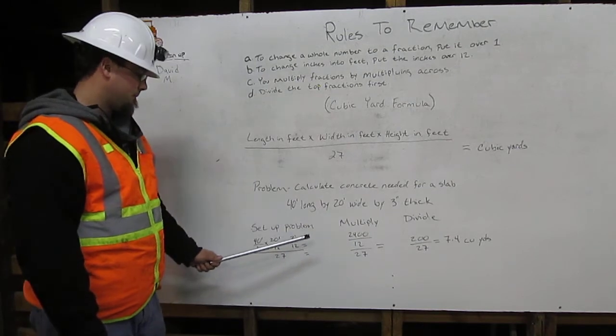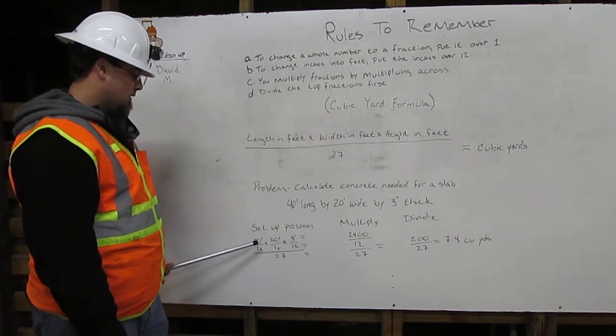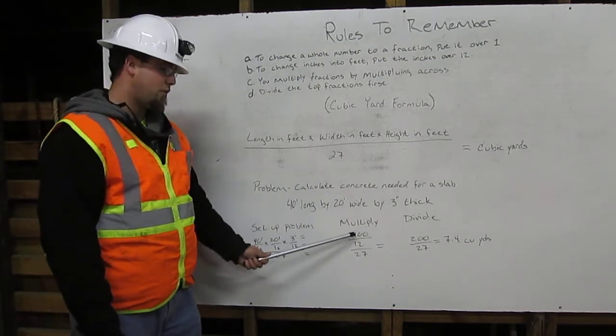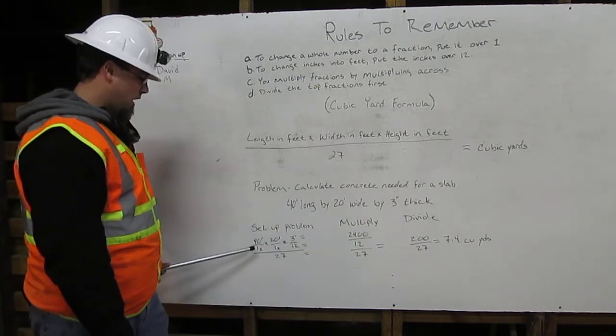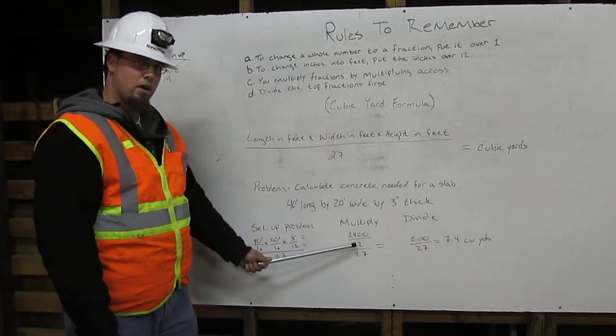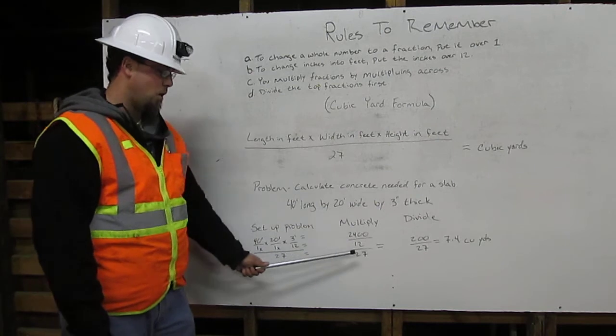Now we're going to multiply. 40 times 20 times 3 equals 2400. 1 times 1 times 12 equals 12. Then we're going to bring our 27 over.